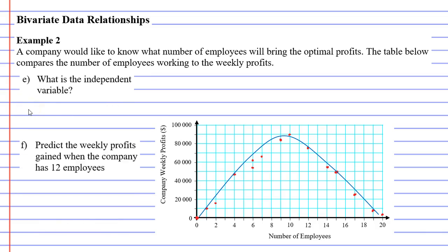Now looking at question E. What is the independent variable? We mentioned earlier that whatever is on the horizontal axis is the independent variable. So the independent variable is the number of employees.